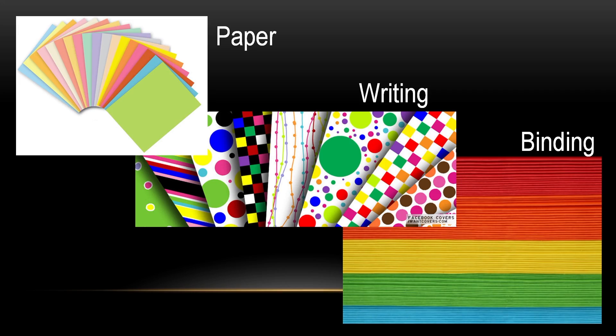If you want to generate integrated information platforms such as books, you first need to start with paper — high quality, big, cheap. Then you need to learn to write or color in a way that you like. Then you need to integrate them vertically, or bind them, so that you can generate this integrated platform. And we want to do very similar things with atomically thin materials and circuits.